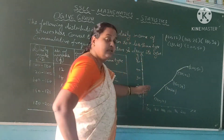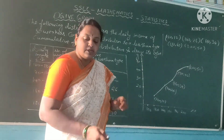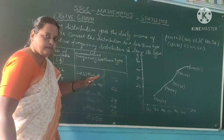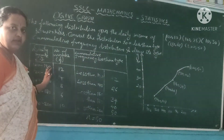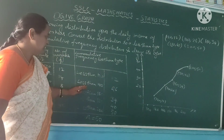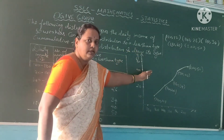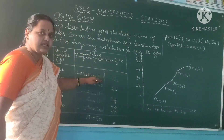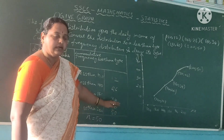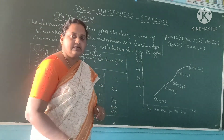So this is the less than walker graph. Is it clear, children? Suppose in a question if only two columns are given without a class interval — for example, less than 140 equals 12 and less than 140 equals 16 — then directly plot the points. Consider the less than value as the x-coordinate and the frequency as the y-coordinate, then plot the point on the graph. Is it clear, children?